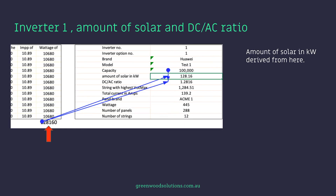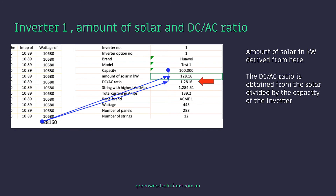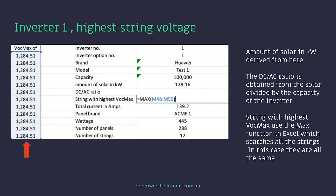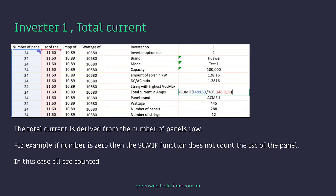The amount of solar in kilowatts is derived from here. The DC/AC ratio is obtained from the solar divided by the capacity of the inverter — and we don't want to exceed that DC/AC ratio. The string with the highest VOC MAX uses the MAX function in Excel, which searches all the strings. The total current is derived from the number of panel rows — if the number is zero, the SUMIF function does not count the short-circuit current of that panel. In this case, all are counted.